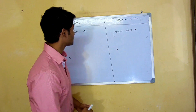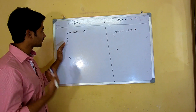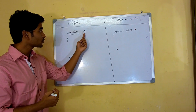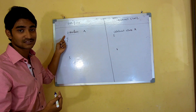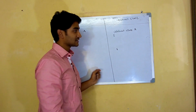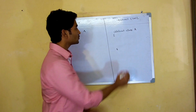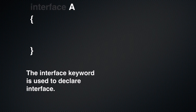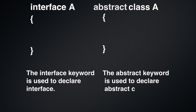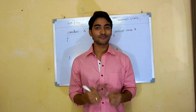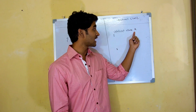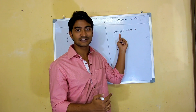Alright, let's discuss the difference between the interface and abstract class. If we talk about an interface, it should be preceded by the keyword 'interface'. Similarly, whenever you are creating any abstract class, that class should be preceded by the keyword 'abstract'. This is a very common difference — whenever you create an interface, use the keyword 'interface'; whenever you create an abstract class, use the keyword 'abstract'.